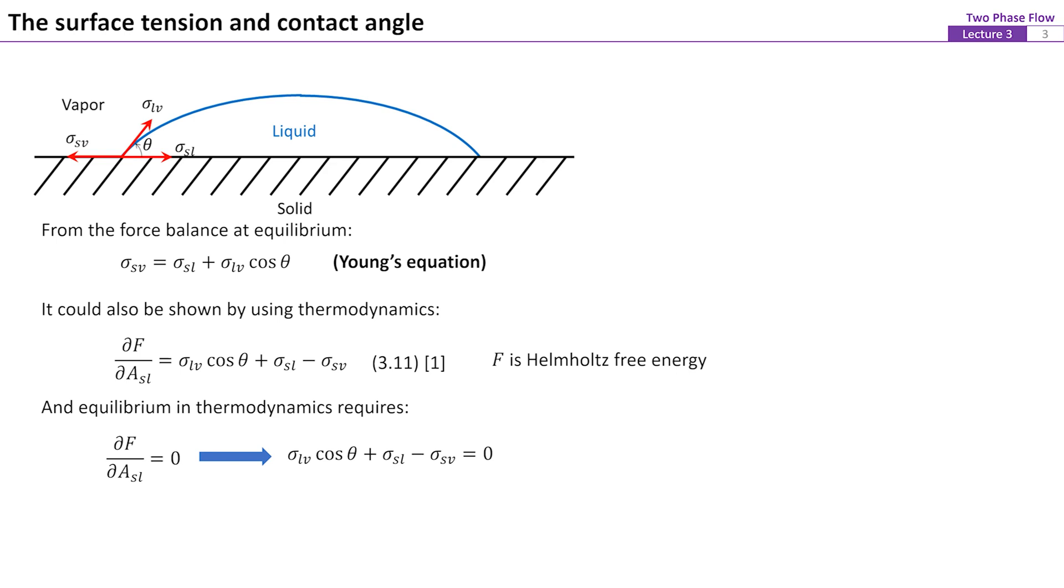This figure shows a contact point between three phases of solid, liquid and vapor. Sigma is the interfacial tension between each two of those three phases. At equilibrium, a force balance at the contact point of these three phases leads to the result of Young's equation. The vertical force sigma LV times sine theta is usually negligible considering the modulus of elasticity for most solid is high.